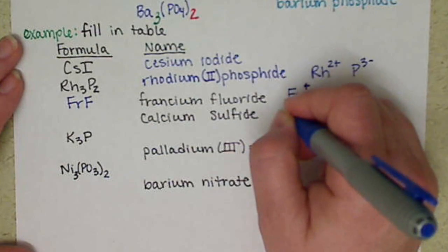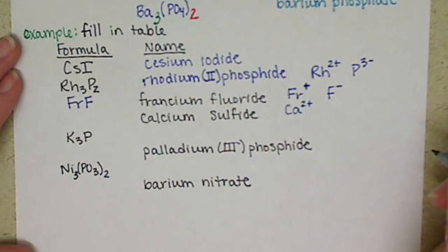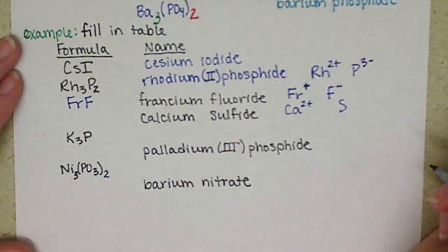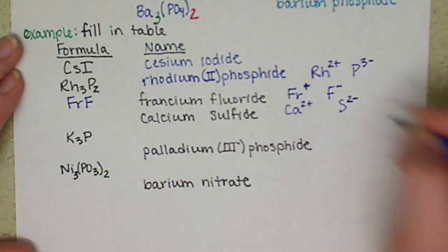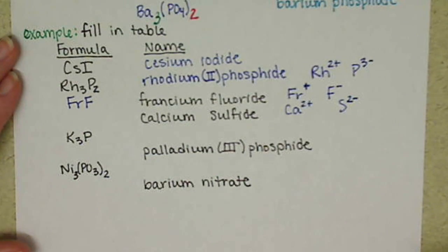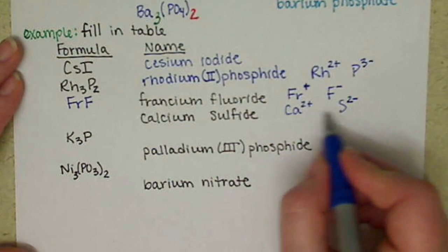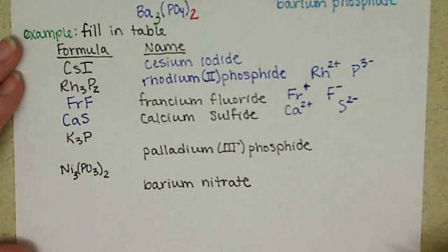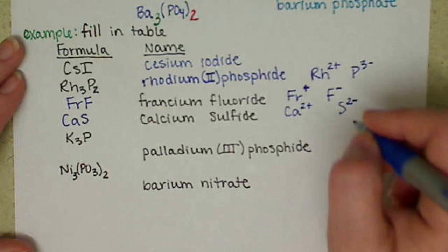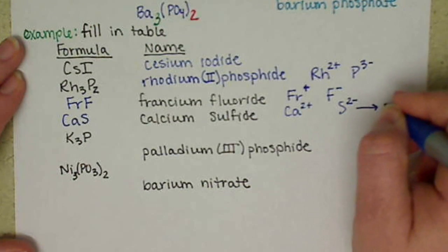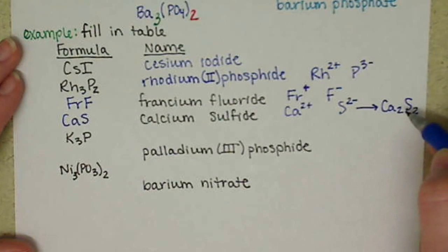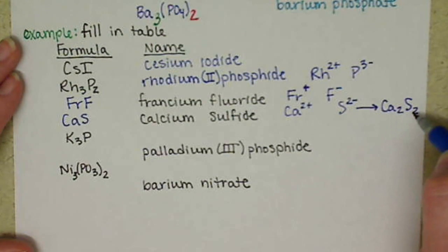For calcium sulfide, calcium forms a 2+, it's in group 2A. Sulfur is in group 6A, it wants two more electrons, so it has a 2-. We need a 1-to-1 ratio for that, so we have CaS. If you did your cross-charge method, you get Ca2S2, but don't forget that these are both even, so we need to reduce those down to the lowest multiple.